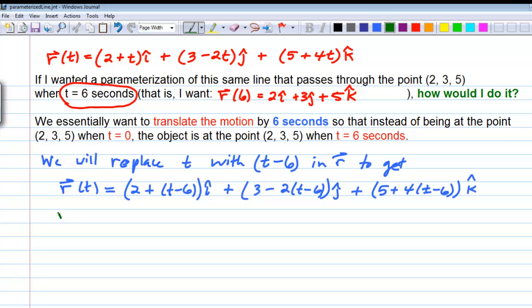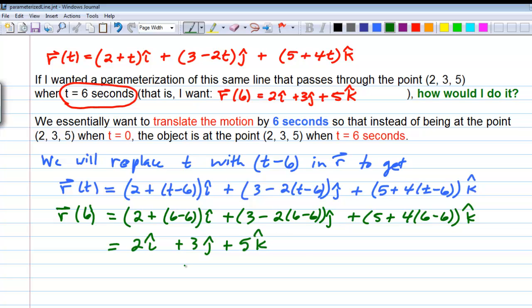Let's just try this out. If we put 6 into this function, let's see what we get. We get 2 plus 6 minus 6 i. 6 minus 6 is going to be 0. That will give us 2i. Second component, we get 3 minus 2 times 6 minus 6 j. That's going to be a 0 term. So, we end up with plus 3j plus 5 plus 4 times 6 minus 6 k. And again, 6 minus 6 is 0. So, that term drops out. We get plus 5k. So, the object will be at the point 2, 3, 5 when t equals 6 seconds.